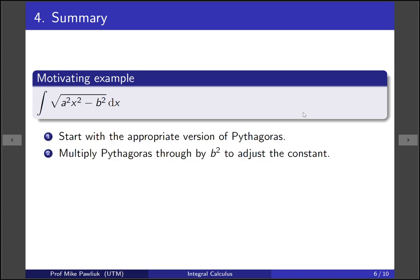Multiply Pythagoras through by b squared to adjust the constant. Then set a squared x squared minus b squared to be the side of Pythagoras that you're using, and then solve for x. So you have what you want and what you have. Set them equal, and that will tell you what x should be.